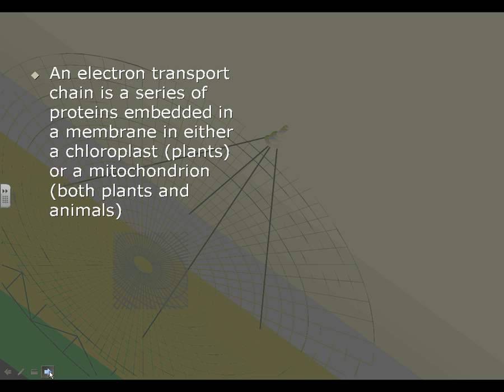So an electron transport chain is a series of proteins embedded in a membrane, either in a chloroplast in plants or a mitochondria in both plants and animals. And you may have heard of these two things before. These are parts of the cell, or organelles.